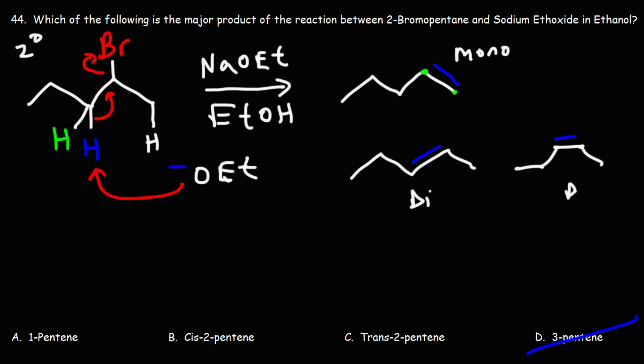Both of these are disubstituted alkenes. So they're much more stable than a mono-substituted alkene. This one has two R groups. And the same is true for this one. It has two R groups as well. Now the trans-isomer is going to be more stable than the cis-isomer. So that's why this is going to be the major product.